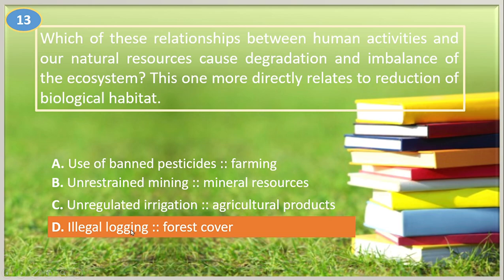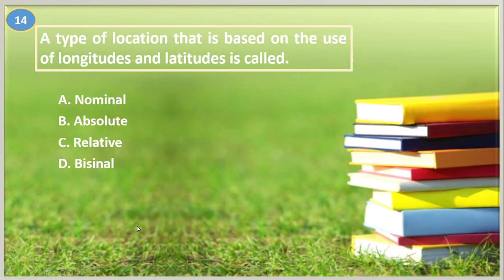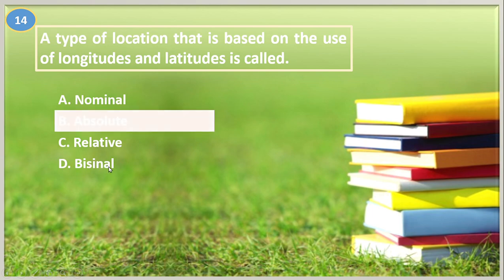Number fourteen. A type of location that is based on the use of longitudes and latitudes is called: A. Nominal, B. Absolute, C. Relative, D. Divisional. The answer is letter B, Absolute.